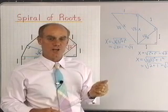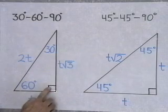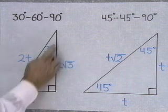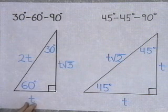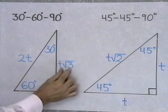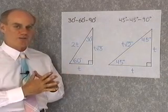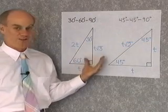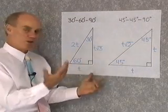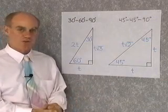Next I want to look at two special triangles: the 30-60-90 right triangle and the 45-45-90. In a 30-60-90 triangle, if the shortest side is t, the hypotenuse is always 2t, and the third side is always t√3. That's always the case in a 30-60-90 triangle. What you need to know is that the longest side is always twice the shortest side, and the third side is always the shortest side times √3.